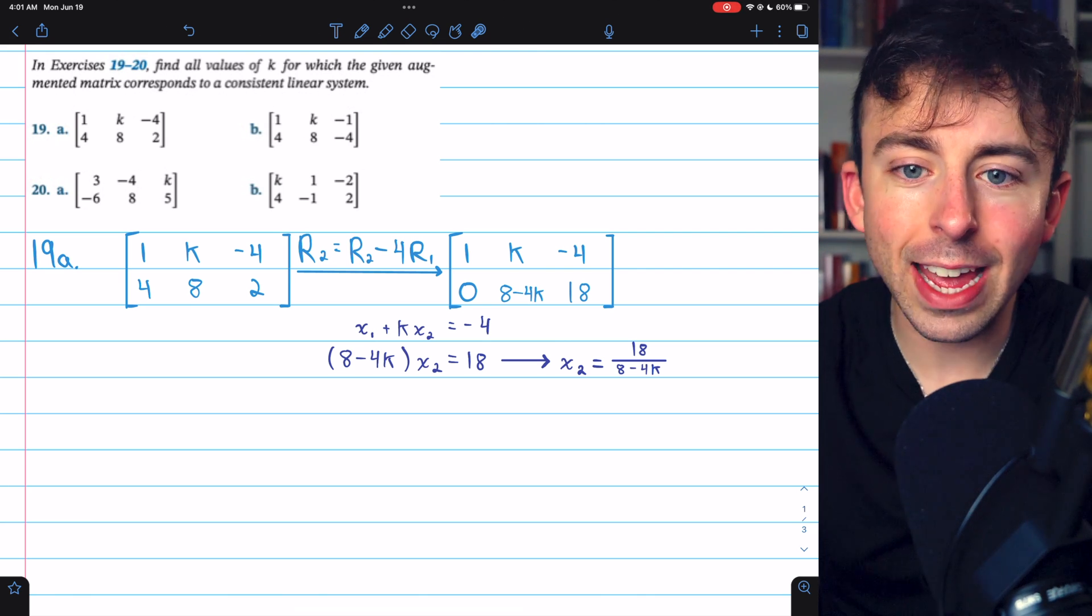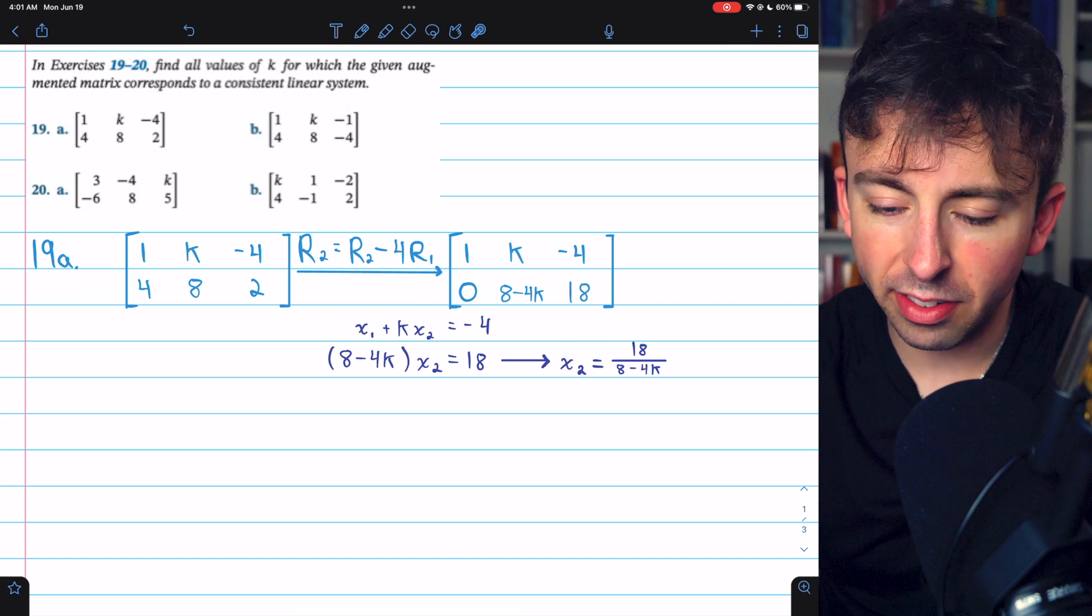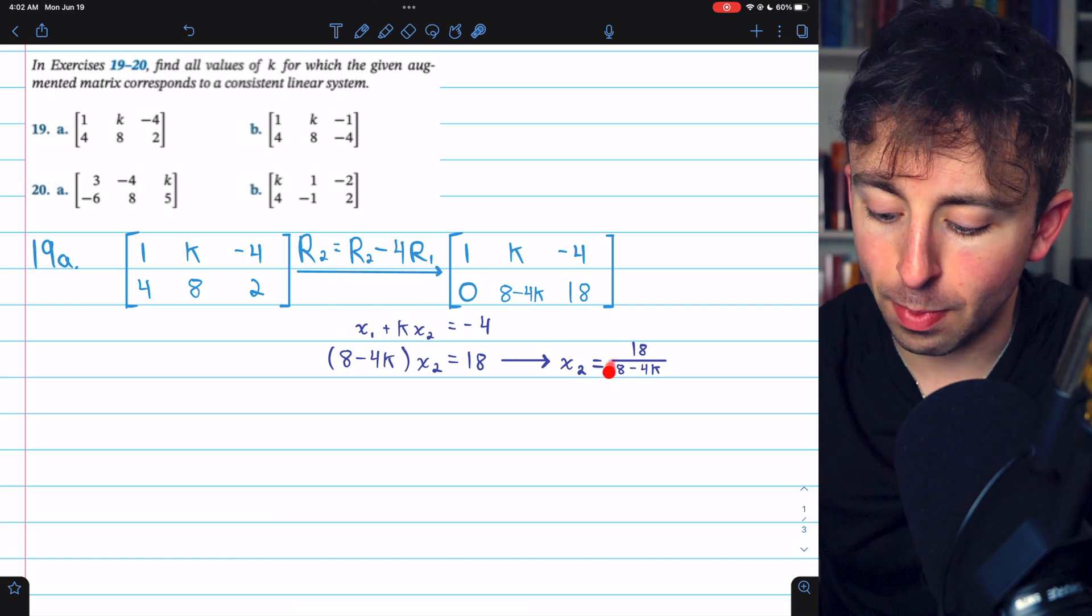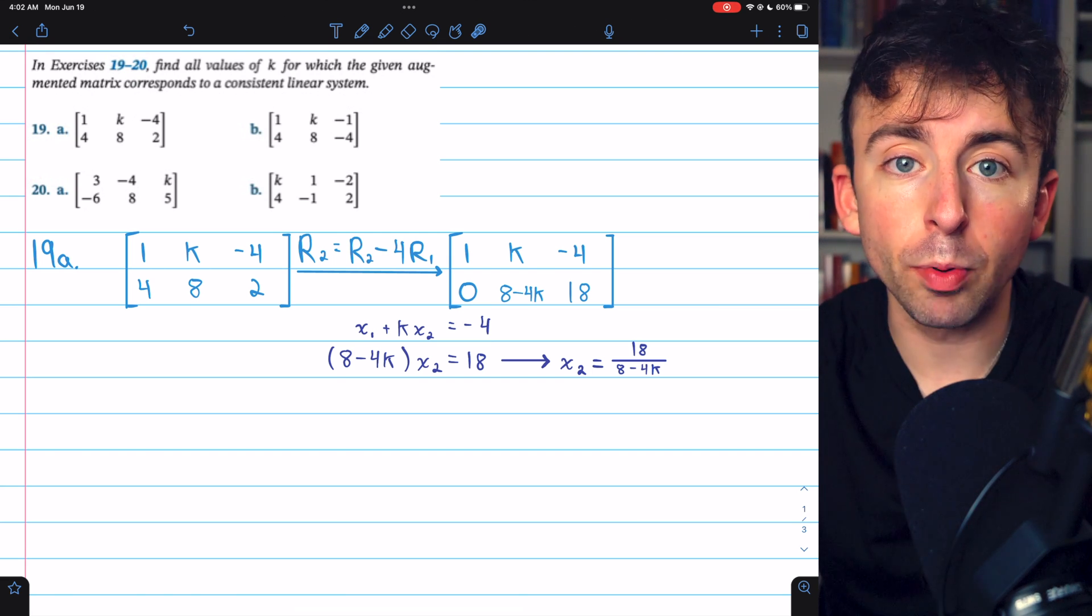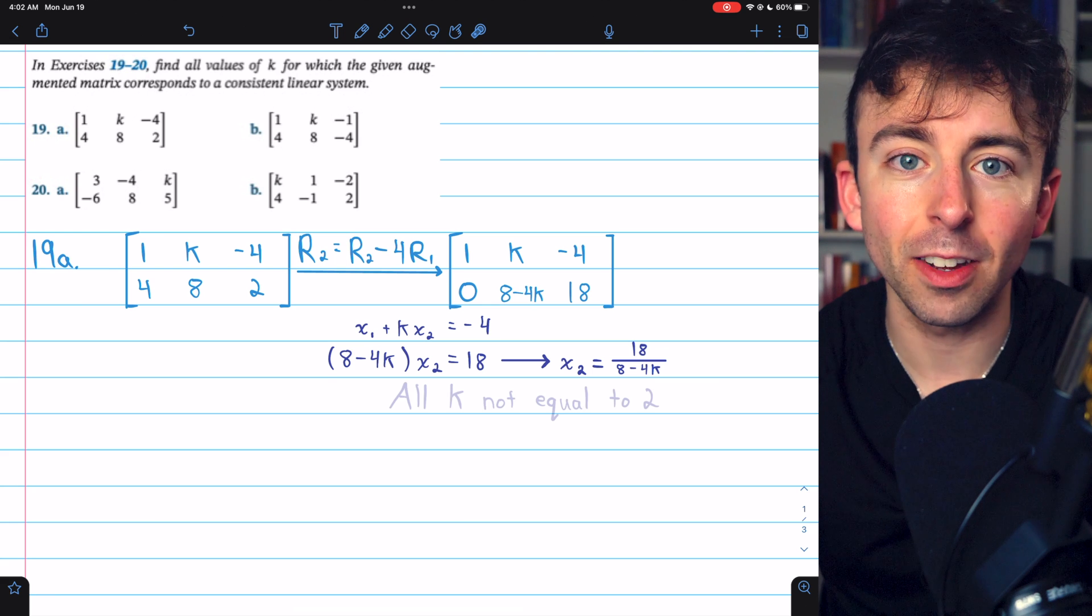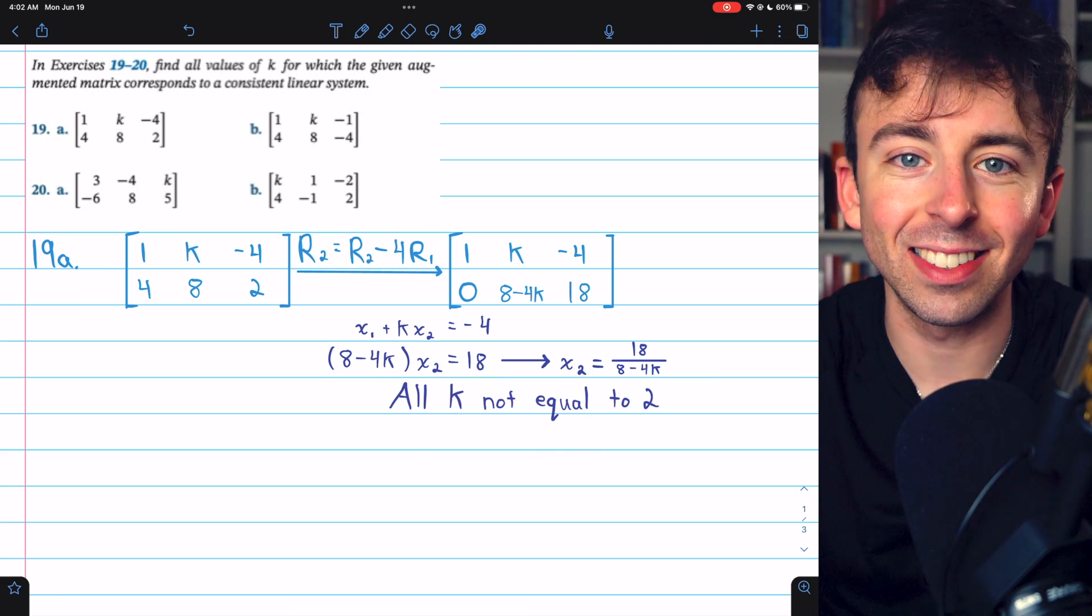So whatever k is, we will have a value for x2, and then that will give us a value for x1. The only situation that would cause a problem is if we had a division by 0. But as long as k isn't 2, that won't be a problem. Any other value of k would give us a consistent system. So pick any value of k you want except 2, and we'll have a consistent system.